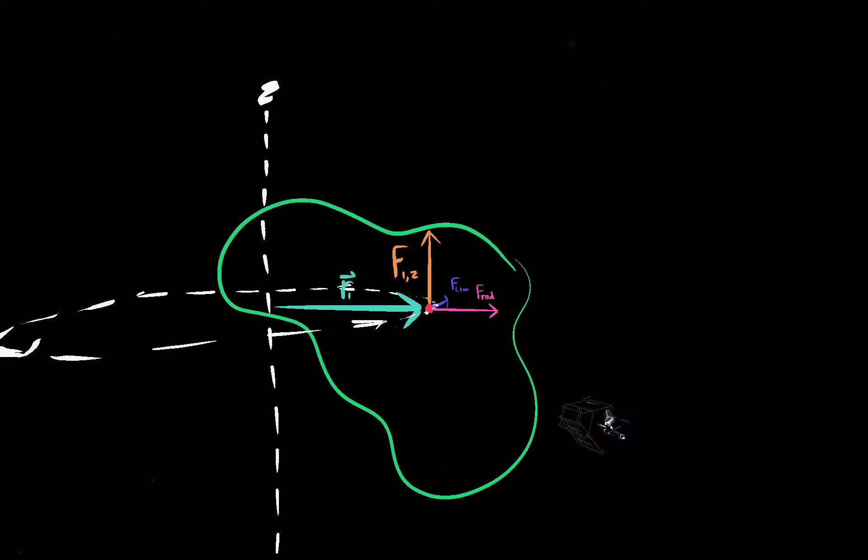A net force acting on one of these particles has three components: F_rad, that's the radial component of the acceleration in pink here, radially out from our rotation axis; F_tan, tangential to the circle that the particle would be going around if it were rotating around our axis of rotation; and F_z, which is just along the axis of rotation here.